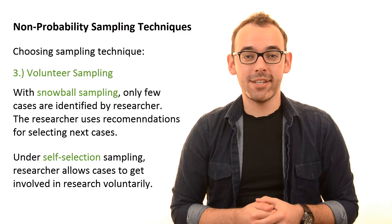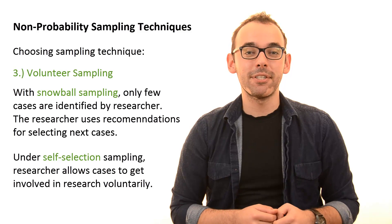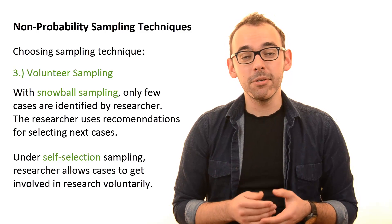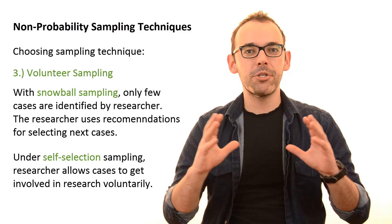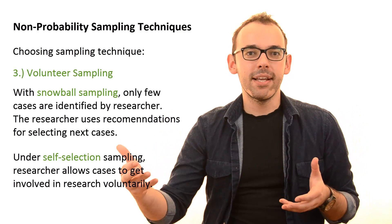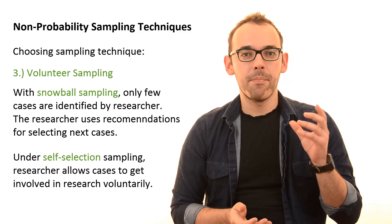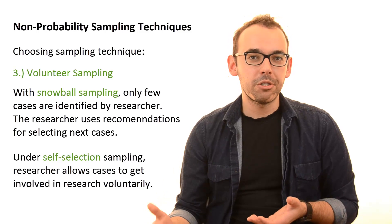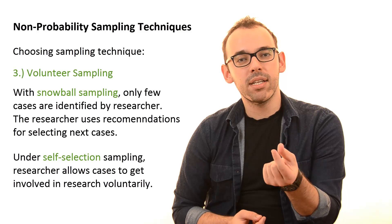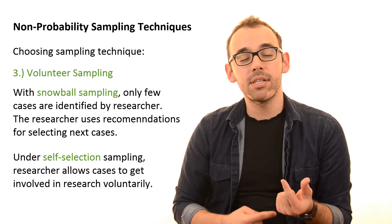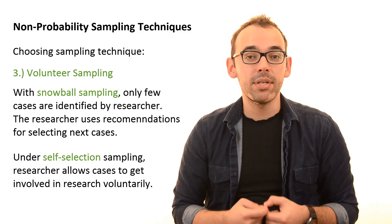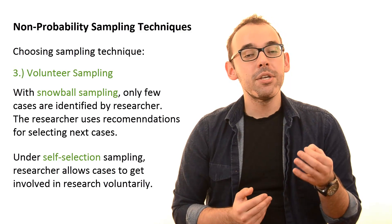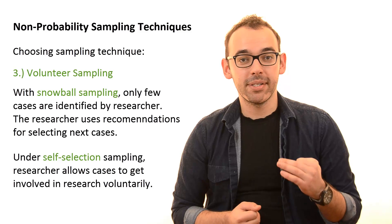Self-selection sampling is a very often used technique, even though students don't often realize it. What students often do is create a questionnaire and post it on Facebook. Some people decide to answer it — that is self-selection. People decide themselves whether they want to get involved in the research. So be careful: if you make a questionnaire and post it on Facebook, you are going for self-selection sampling.